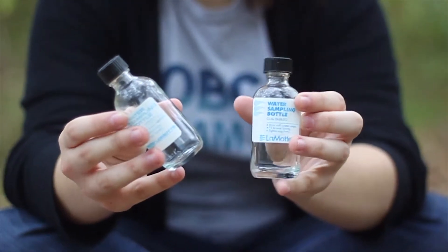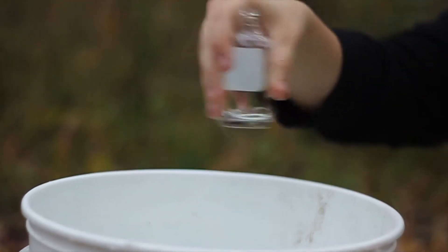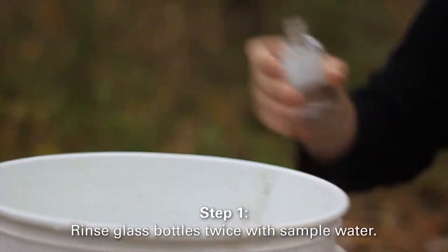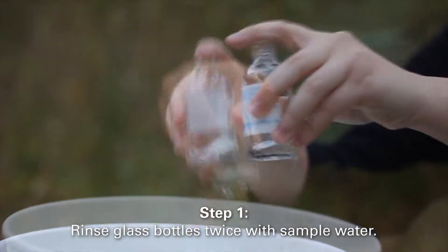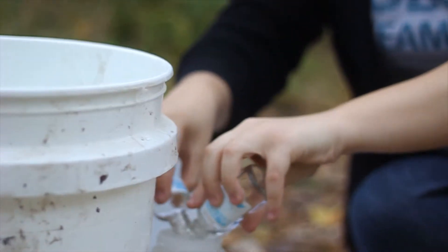To start our measurement, we will take the two identical glass bottles out of our kit. As we did with our conductivity reading, we will rinse them twice with the sample water and dispose of the rinses in the waste container.